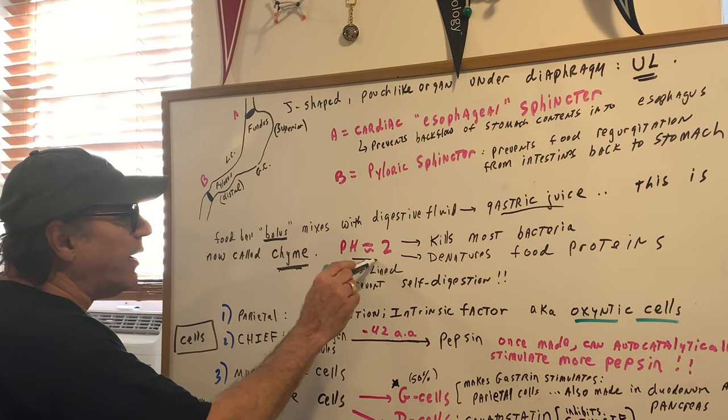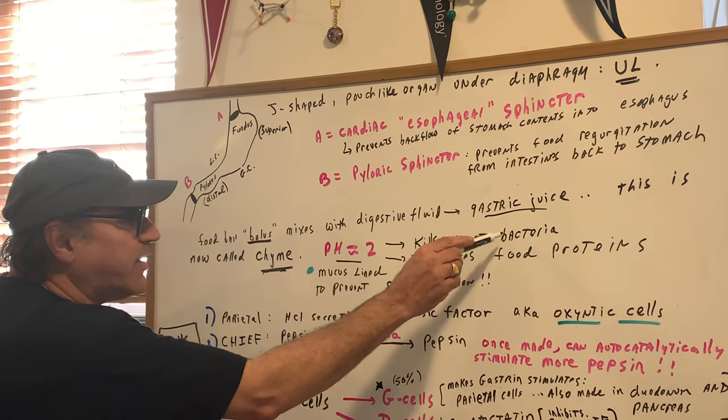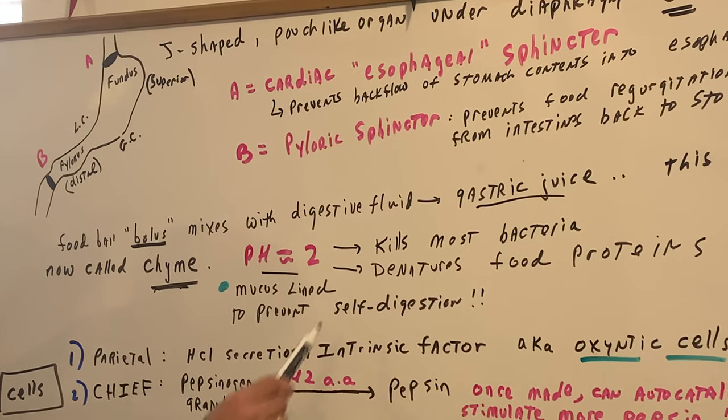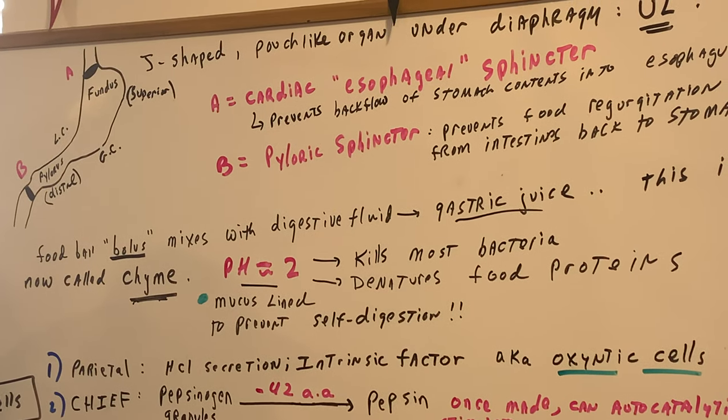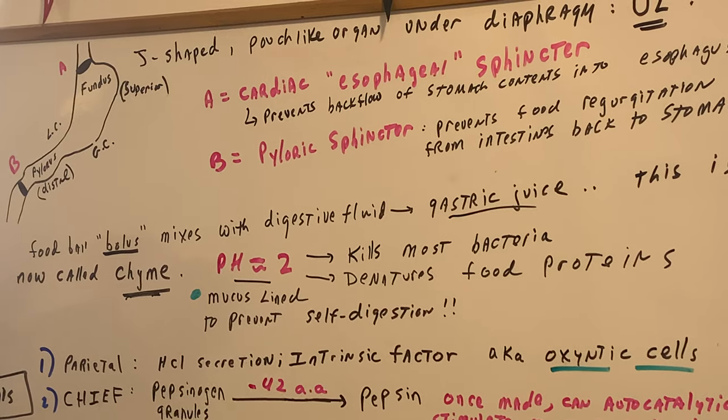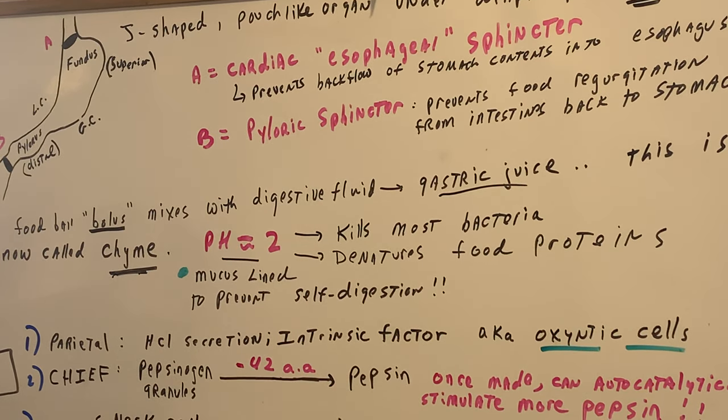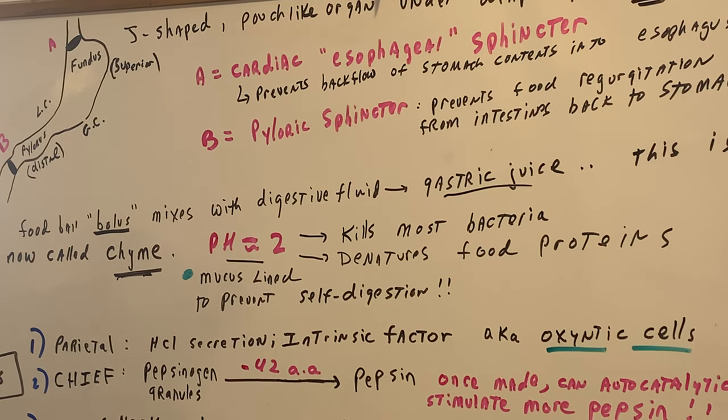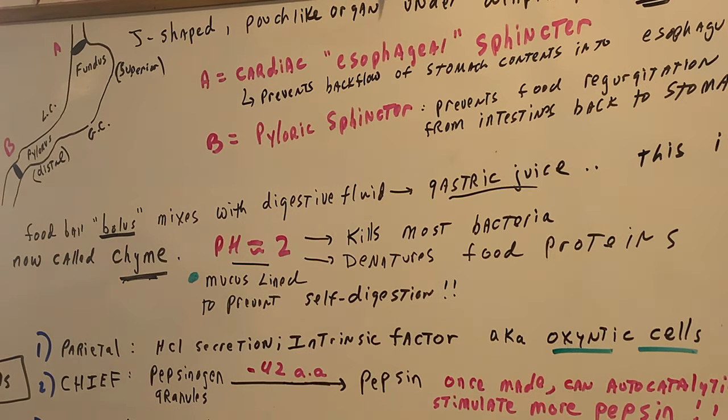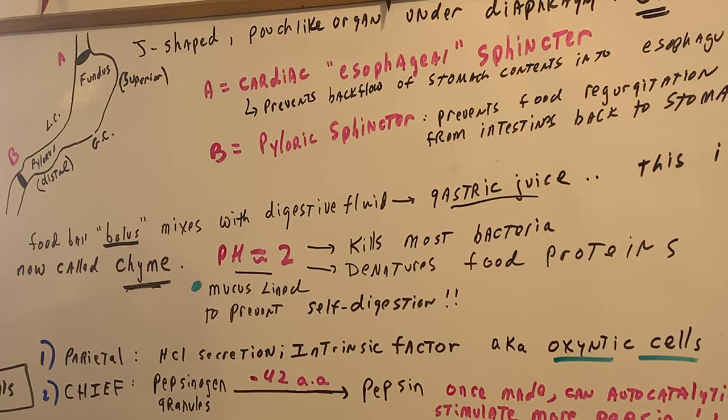The idea is to have an acidic stomach to kill most of the bacteria, and if you remember in the last lecture we talked about denaturing proteins. The high acidity will denature proteins that are in the food. It doesn't self digest itself though because the stomach is lined with a mucus covering.